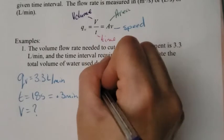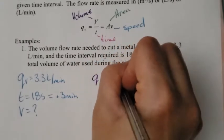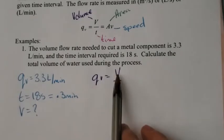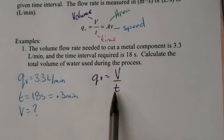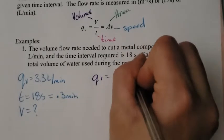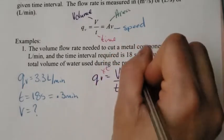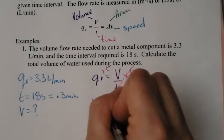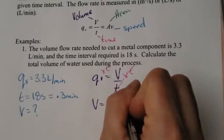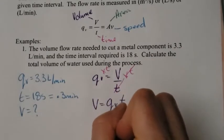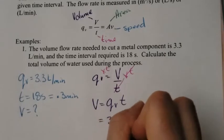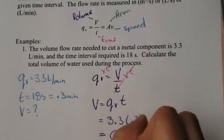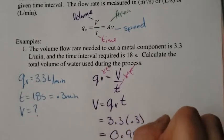It says calculate the total volume of water, so we're looking for V. Our formula is QV equals volume divided by time. If you want volume all by itself, you move the T over by multiplying, so times T. The T's cancel out and we're left with V equals the flow rate times the time. We plug those numbers in: 3.3 times 0.3, and that gives us 0.99 liters.